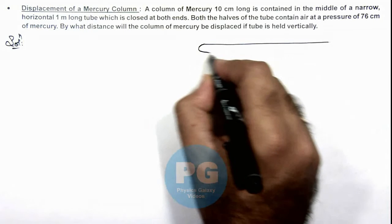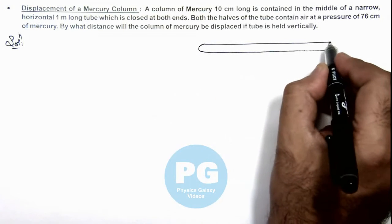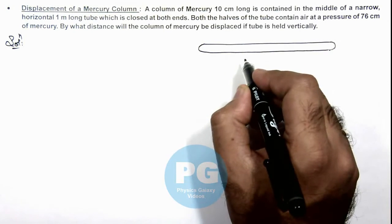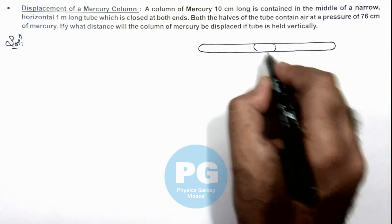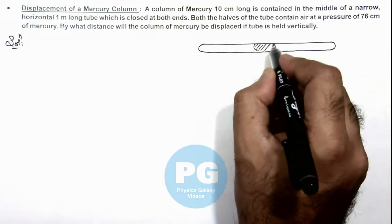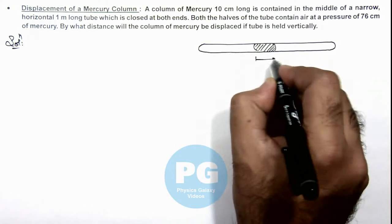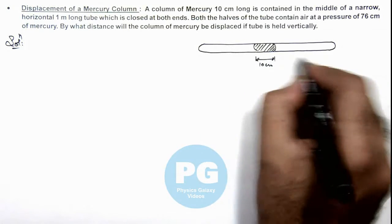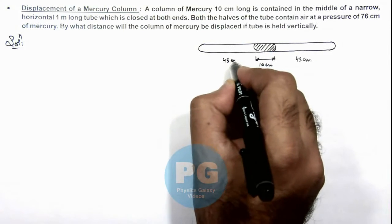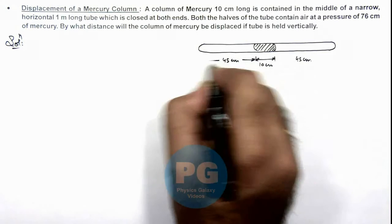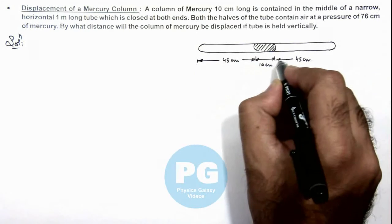If we consider this is the tube which is 1 meter long and the middle 10 centimeter contain mercury, so if this is 10 centimeter, on both the side it is 45 centimeter and 45 centimeter length of air column on the two sides of this mercury pellet.